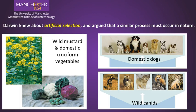Darwin also knew about artificial selection, which was practiced in the late 19th century. This was the idea of taking plants or animals and breeding through artificial selection to get different plants — high yielding plants — and different dogs. All dogs, for instance, are derived from wild canids. If you look at the canids and the domestic dogs, there is a huge variation that you can achieve through artificial selection.